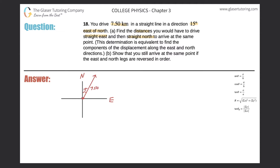This vector has a value of 7.50 kilometers. What they want us to do is find the distances to drive straight east and then straight north to arrive at the same point. Driving east gives us the x component — positive — and driving north gives us the y component, the north component.